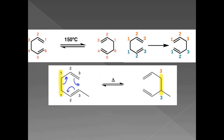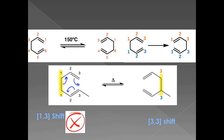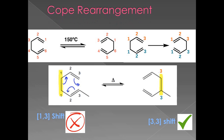The arrow shows that this mechanism involves a cyclic transition state. In our previous example we saw a 1,3-shift and a 1,5-shift. Now let me ask you a question: is this a 1,3-shift or a 3,3-shift? Most of you would say it is a 1,3-shift, but that answer is wrong — it is actually a 3,3-shift. This is a special case, and this reaction is called the Cope rearrangement. We should not be tempted to call it a 1,3-shift.